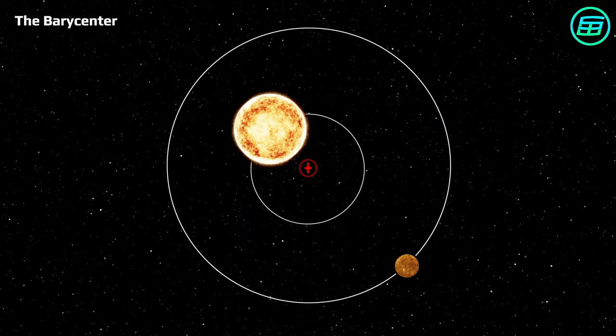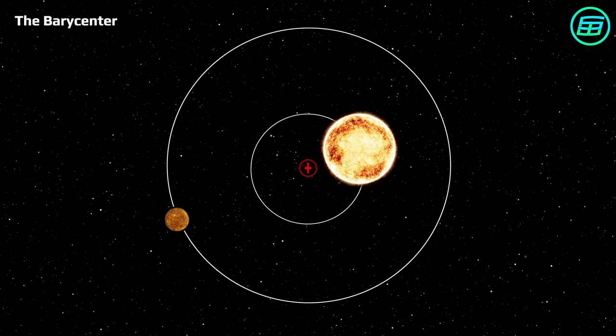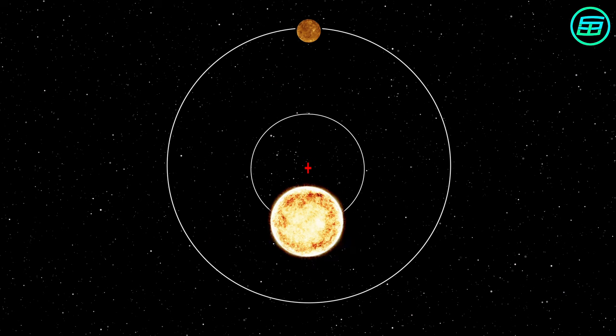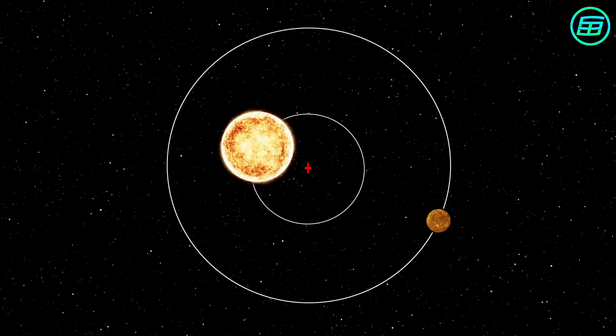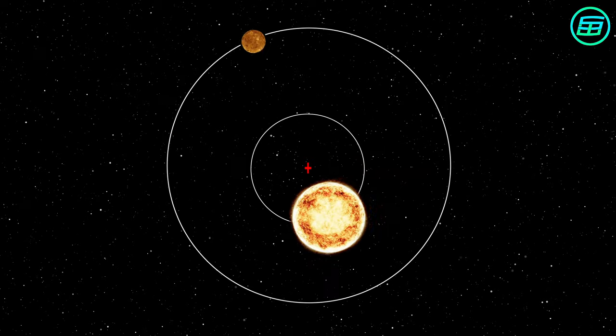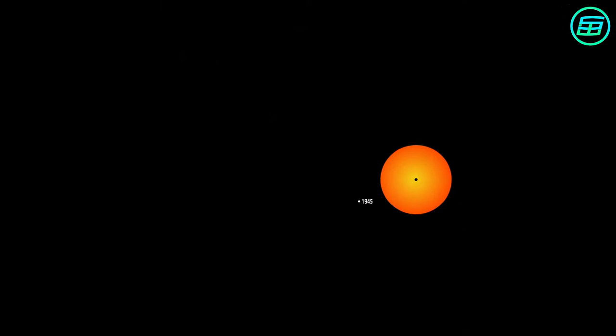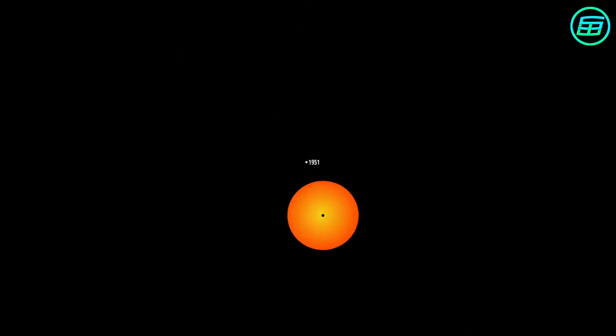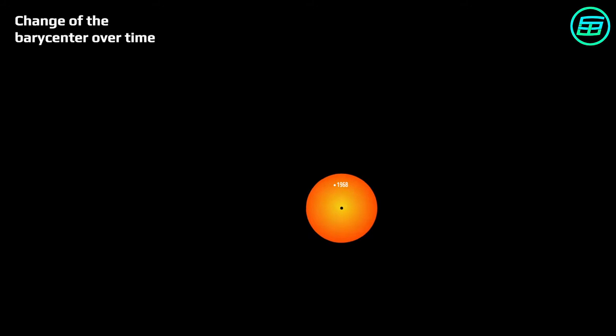The Sun constitutes 99.8% of all mass in the solar system, so the barycentre of the solar system is very close to the centre of the Sun, but not exactly at the centre. The Sun rotates around the barycentre of the solar system, and so it wobbles as it spins around.